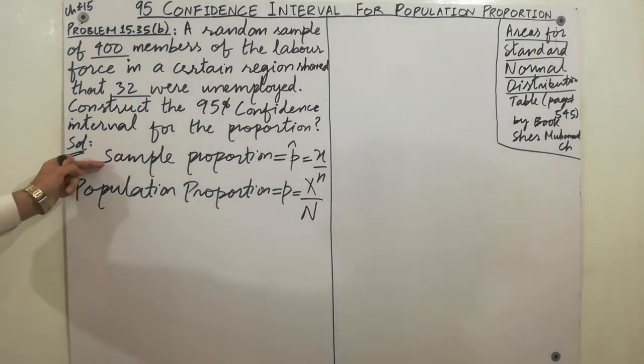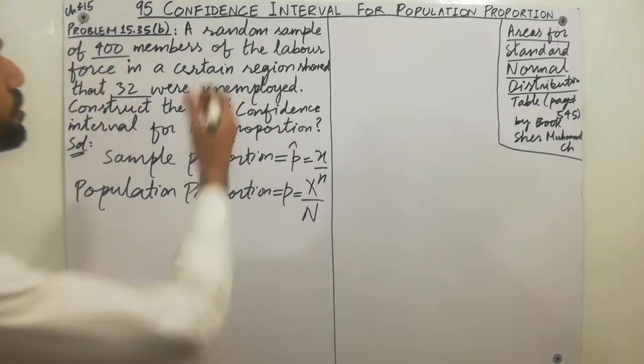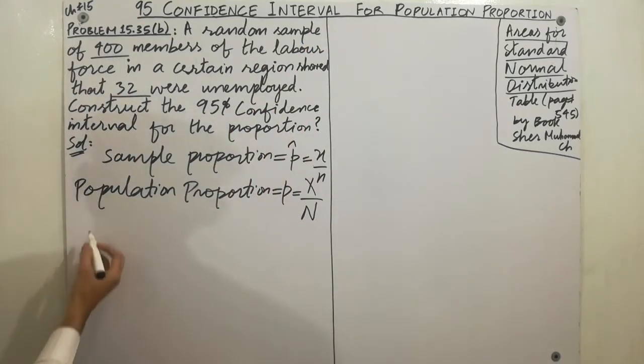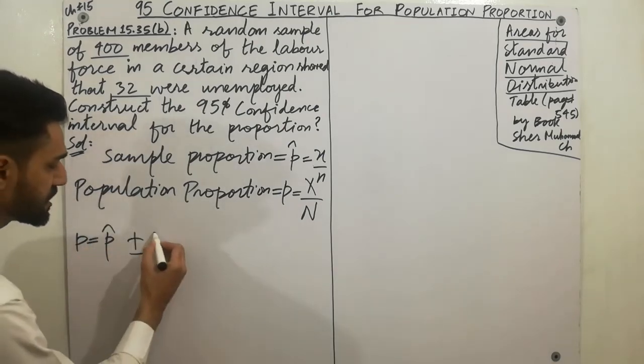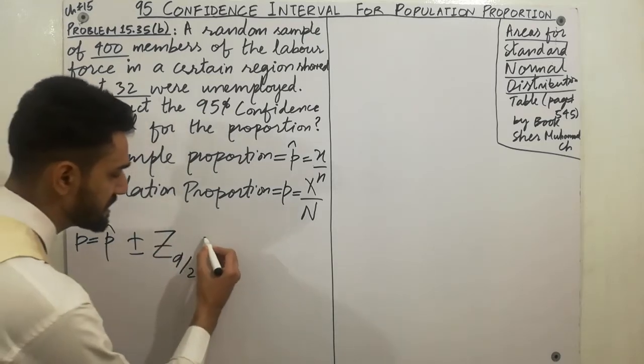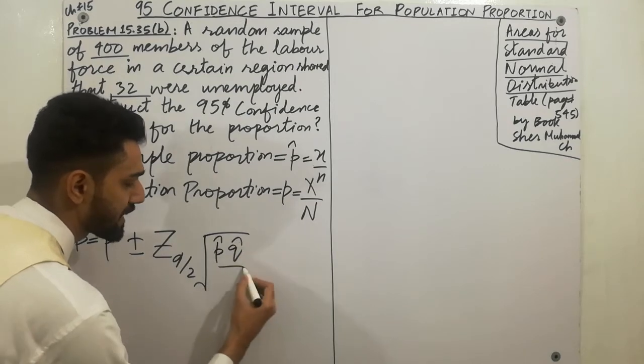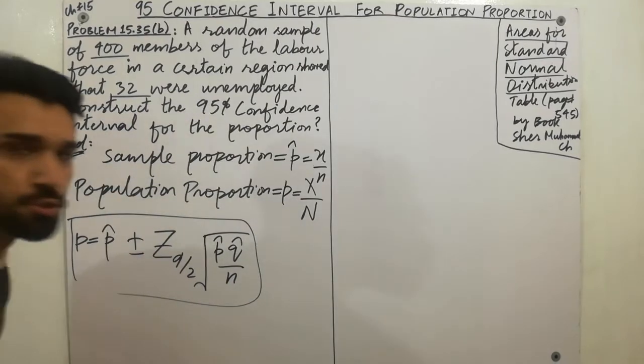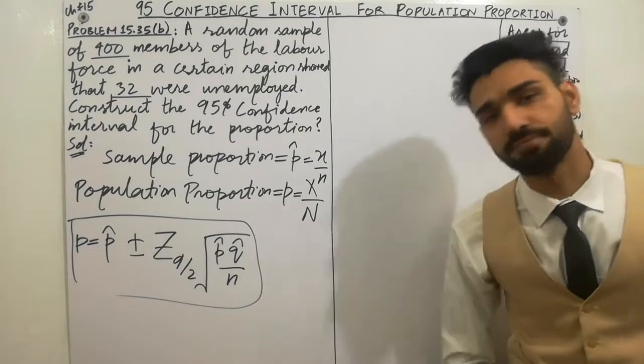Next point is the formula for confidence interval for population proportion. Very simple - the formula is p equals p hat plus minus, must remember, z alpha by two, square root of p hat divided by n. So this is the formula of population proportion which we use in this problem. I hope that you have gained a lot of points - the difference and the formula.